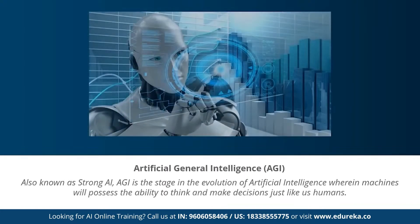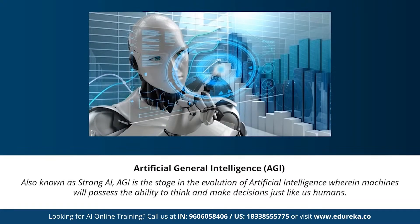Next is artificial general intelligence, also known as strong AI. This stage represents the evolution of AI wherein machines will possess the ability to think and make decisions just like human beings. There are currently no existing examples of strong AI, but it's believed we will soon create machines as smart as humans. Strong AI is considered a threat to human existence by many scientists, including Stephen Hawking.